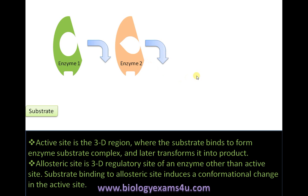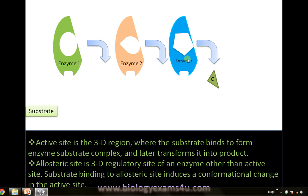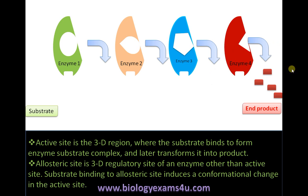That enzyme-substrate complex will be transformed into product B. Then there will be enzyme 3, and B will bind to the active site of enzyme 3, giving product C. This C will act as a substrate for enzyme 4, producing a final end product — which is no longer required inside the cell.